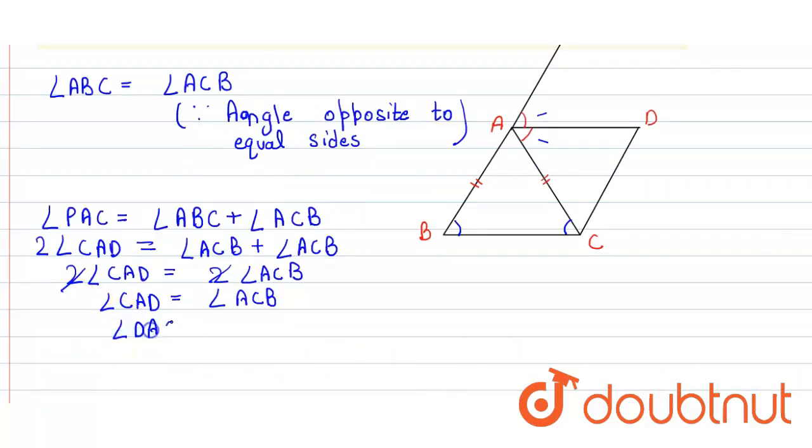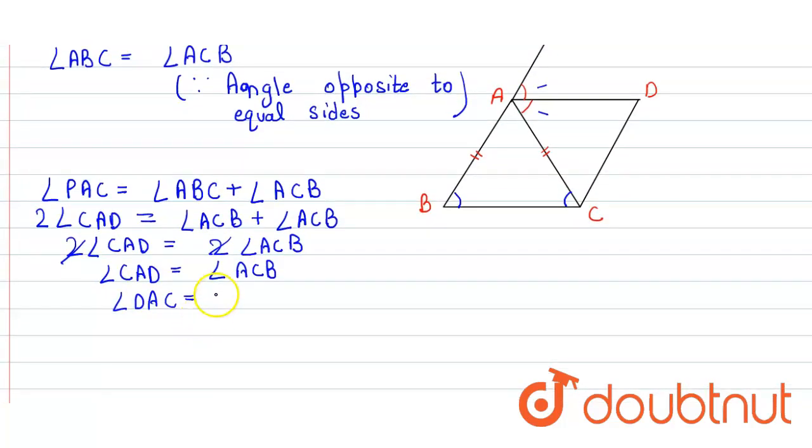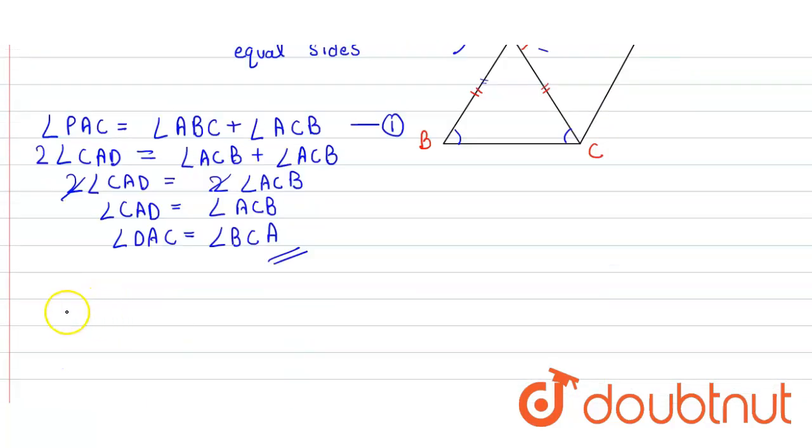Angle DAC is equal to angle BCA. So hence proved. This is the first part.